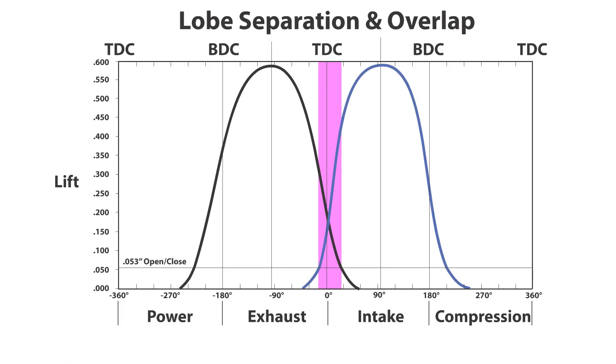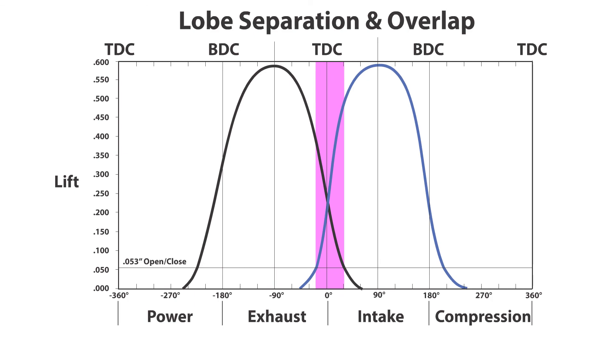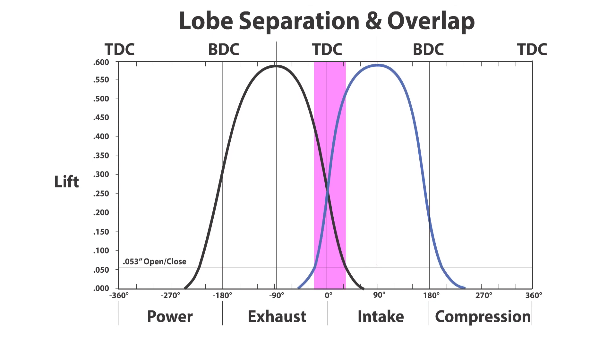So why is lobe separation angle important? The lobe separation angle affects the amount of overlap a cam will produce. This illustration shows that as lobe separation angle is reduced, overlap increases. Overlap is defined as the number of degrees of crank rotation when both the intake and exhaust valves are open at the same time — occurring during the end of the exhaust stroke and the beginning of the intake stroke. A cam grind with wider lobe separation angle will produce less overlap, resulting in better low RPM performance and smoother idle at the expense of high RPM performance. Cams with narrower lobe separation angles create more valve overlap, which results in more high RPM power but a rougher idle and less power and torque at low RPM.